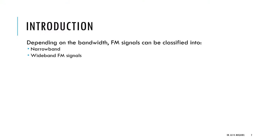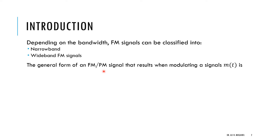Depending on the bandwidth of the signal — the FM signal or PM — it can be classified into narrowband or wideband FM. So we have two types of angle modulated signals: narrowband or wideband.